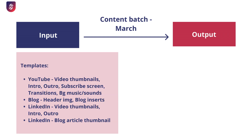Now, if we know that that is the output we want to create, it's time to look at the input that needs to go into the system. If I want to create YouTube videos, I know that I will need video thumbnails, an intro and outro, probably a subscribe screen, some transition screens or transition music or effects, as well as background music and sounds.